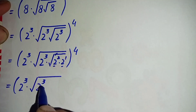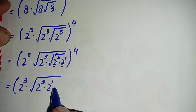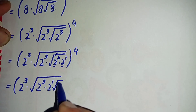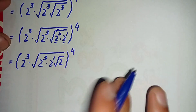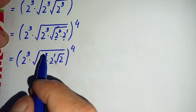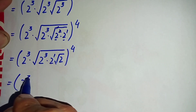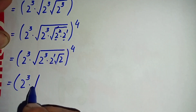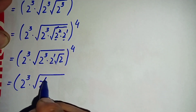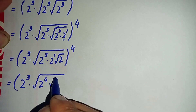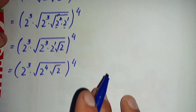So the whole equation will become two raised to power three times two raised to power three, times two, which can also be written as two raised to power one, and the next will become square root of two raised to power four. Now here the bases are the same, so we will add the powers. This will become two raised to power three times square root of two raised to power three plus one is four, times square root of two, all raised to power four.